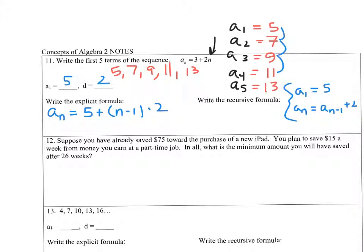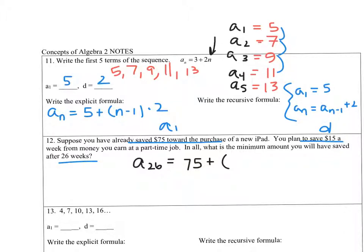Problem 12: You've already saved $75 toward a new iPad and plan to save $15 a week at a part-time job. So a sub 1 is 75 and d is 15. What is the minimum amount saved after 26 weeks? Find a sub 26: 75 plus (26 minus 1) times 15. That gives $450 saved.